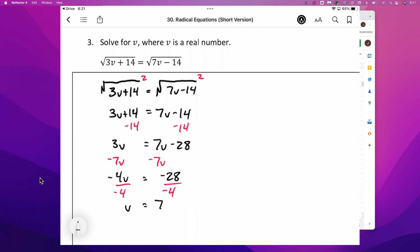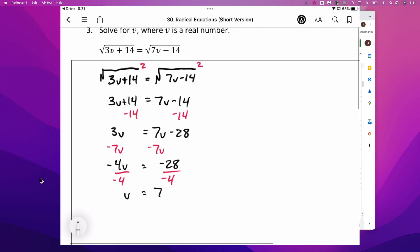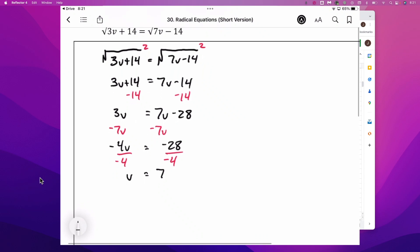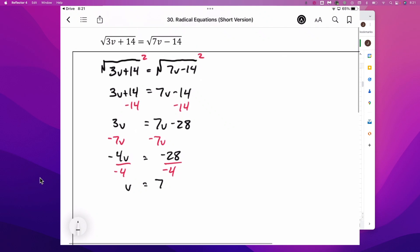So pretty simple. As soon as we square these things and get rid of the radical symbols, it becomes just a regular old equation. I'll leave that there and be moving on to number 4.